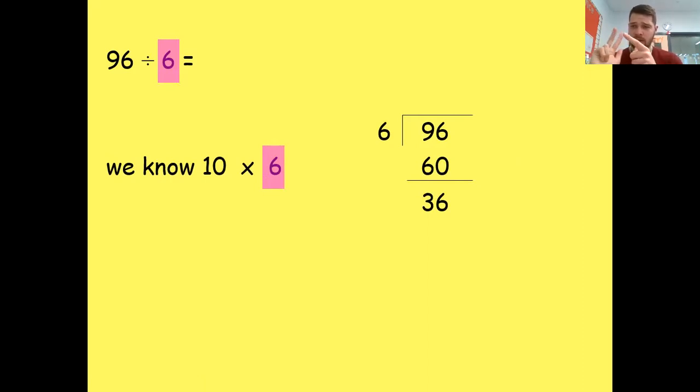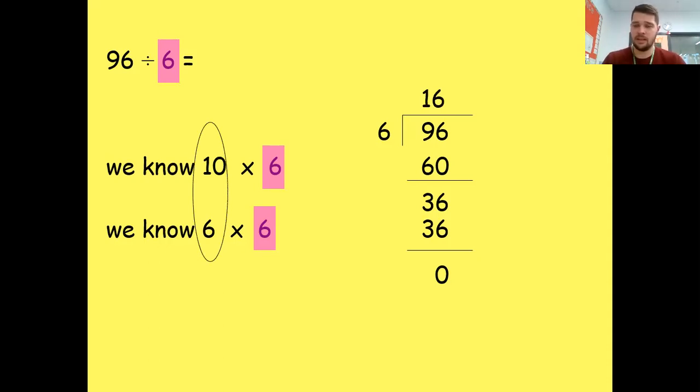Hopefully, we can recognize that 36 is in our six times tables. 6, 12, 18, 24, 30, 36. So I can do another six groups of six. And that gets me to zero. You can break it down in more steps. If you weren't very confident with six times six being 36, you may have done six times five. So again, we've highlighted our times tables, and we've circled our groups to get 16.